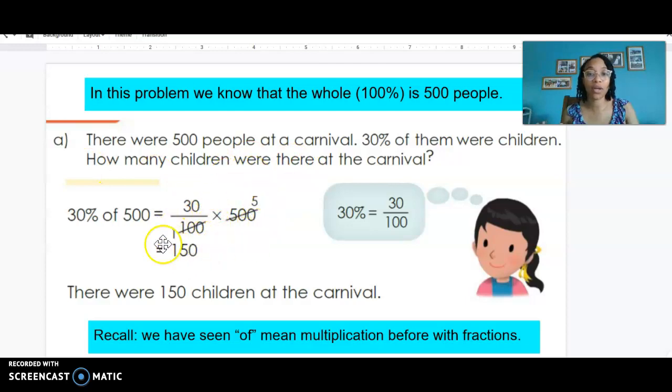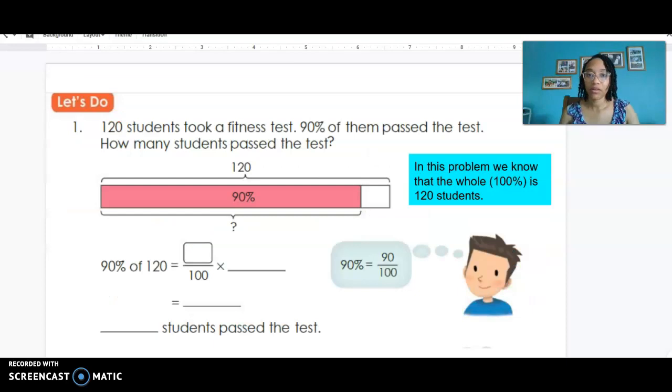And then finally we're able to simplify. You can see here that we've divided 500 and 100 by their common factor 100 to get 1 and 5, and when we finish multiplying 30 times 5 we get 150. There were 150 children at the carnival. Remember that we've seen this 'of' mean multiplication before when we were multiplying fractions or even when we were making equal groups of whole numbers.